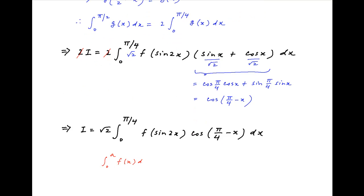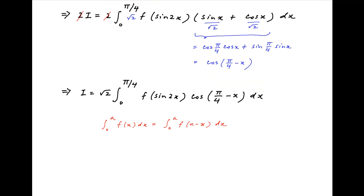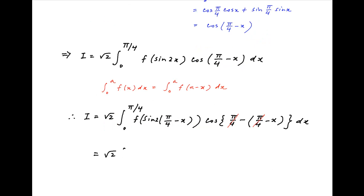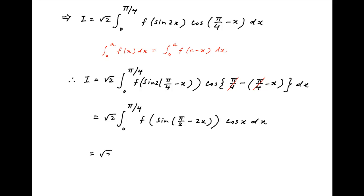Again, recall the property that integral 0 to a of f(x) dx equals integral 0 to a of f(a minus x) dx. Using this result, I equals root 2 multiplied by integral 0 to π/4 with x replaced by π/4 minus x in the integrand. Therefore, the integrand becomes f of sine(2 times π/4 minus x) multiplied by cos(π/4 minus (π/4 minus x)) dx. This simplifies to root 2 times integral 0 to π/4 of f of sine(π/2 minus 2x) times cos x dx. Since sine(π/2 minus 2x) equals cos 2x, I equals root 2 multiplied by integral 0 to π/4 of f of cos 2x times cos x dx, which is the required result.